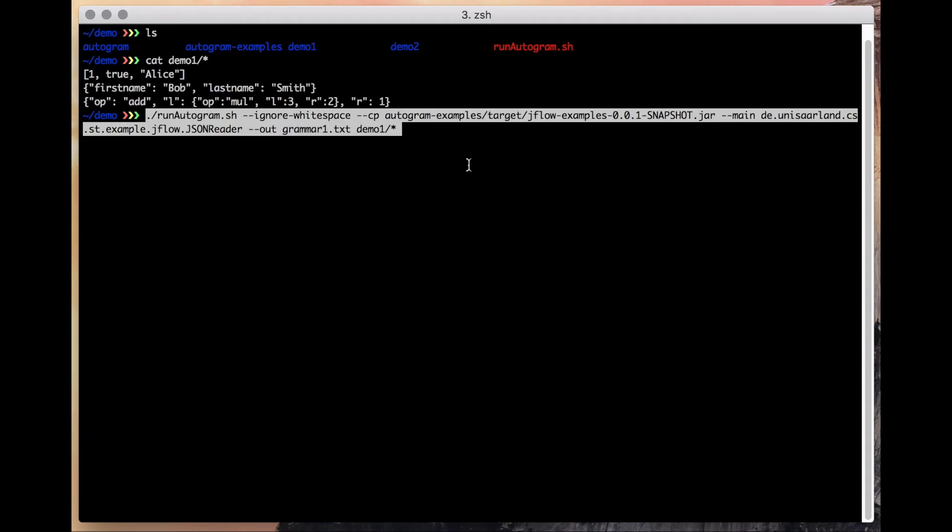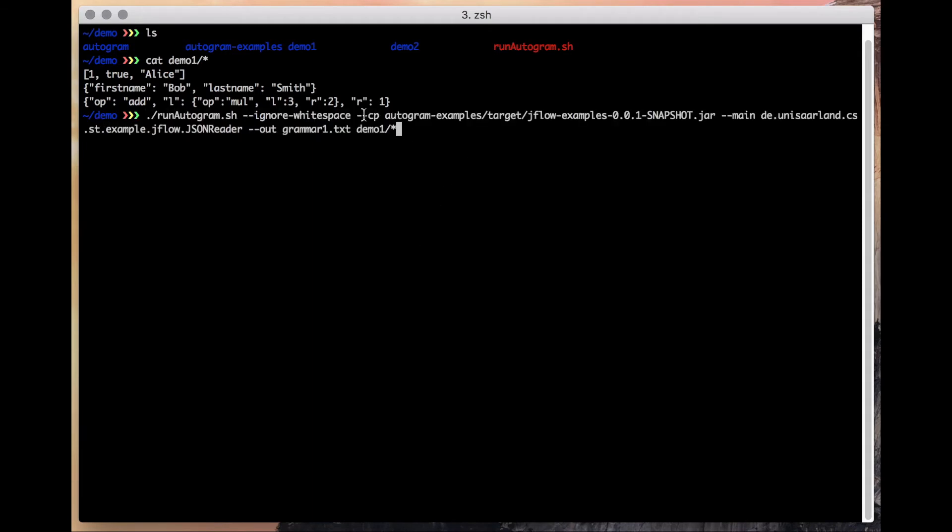Now let's run Autogram. We tell it to ignore white spaces to match up the simplified grammars we've seen in our paper. We give it the jar file of our program for the class path, tell it what the main class is and where to store the grammar.